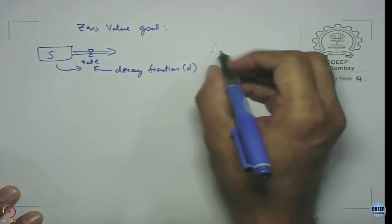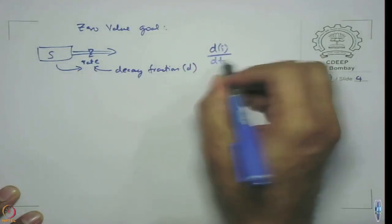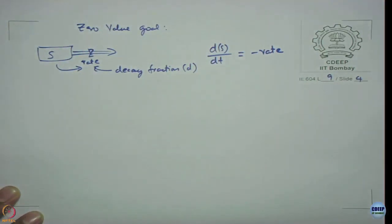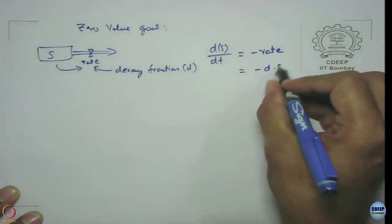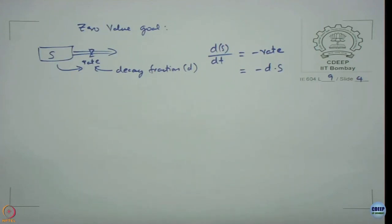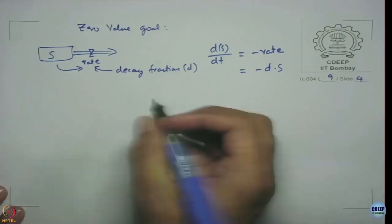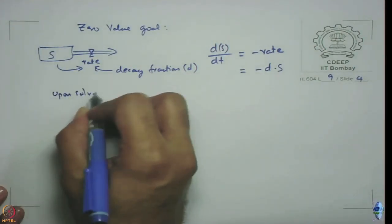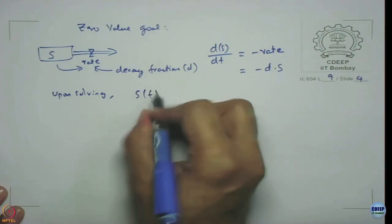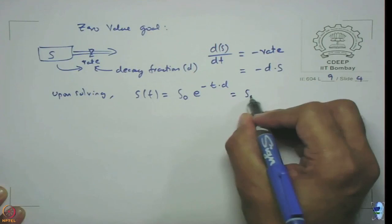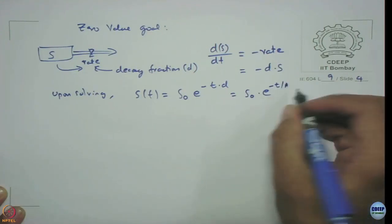So the equation for this, dS/dt is equal to minus rate, which is minus D times S, because I am just reducing it. You can solve it similar to the way we solve for exponential growth or previous scenarios by moving S to the other side and integrating. Upon solving, you can get a nice expression for S at time t, which is nothing but initial value S₀ e^(-Dt) or S₀ e^(-t/AT).